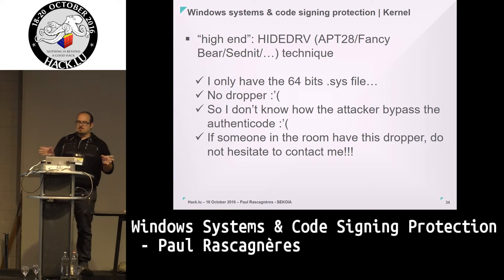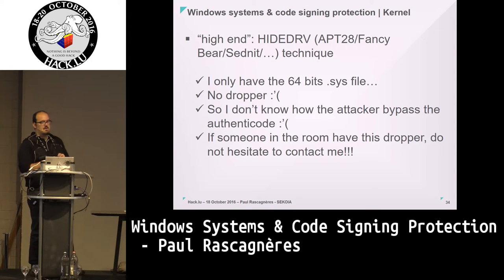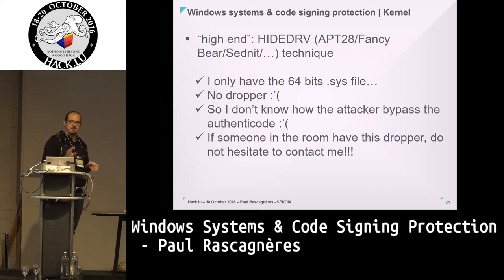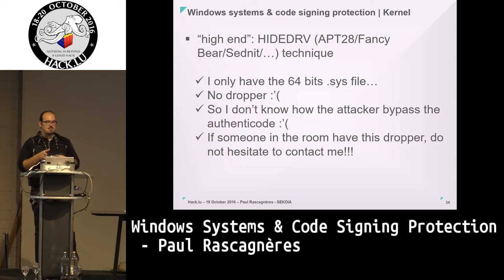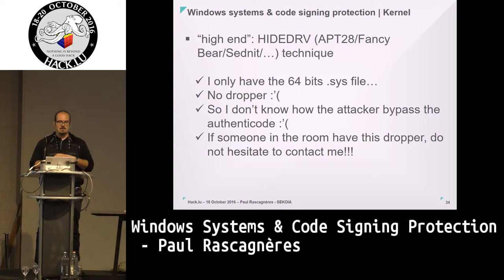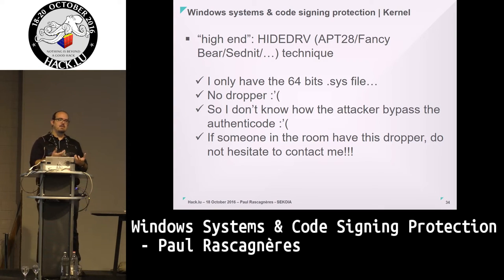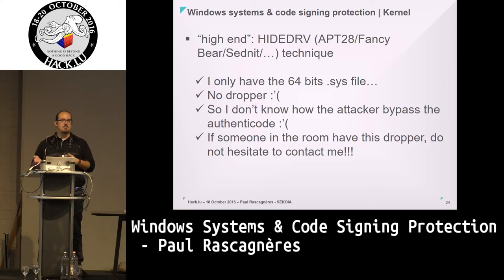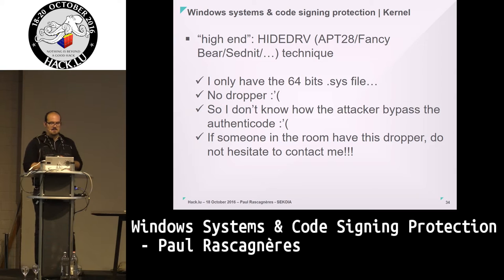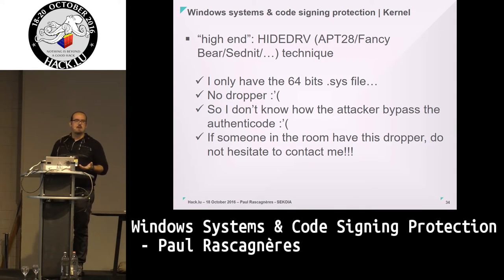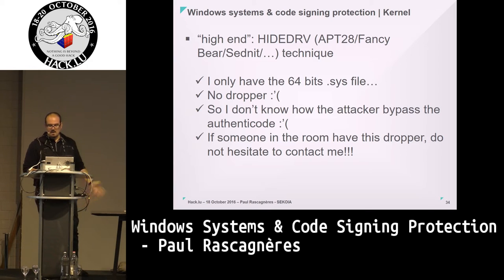Another request for the room: I have a rootkit developed by the group behind APT28/Fancy Bear called XAgent — no paper is available about this rootkit. It's a 64-bit driver but I only have the .sys file; I don't have the dropper or the executable that loads the legitimate driver. If anyone has the dropper I'd be happy to have it to check how this group bypasses the protection and loads this unsigned .sys file. The driver is developed for Windows 7 so they definitely bypass the protection, but I don't know how. Feel free to contact me.